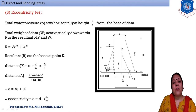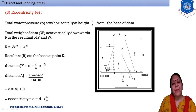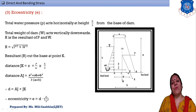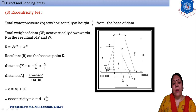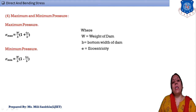The distance 'd' is the summation: d = aj + jk. The eccentricity 'e' is then calculated as e = d − (b/2), where b/2 is half the base width. If eccentricity is positive, sigma maximum occurs on one side; if eccentricity is negative, sigma maximum occurs on the opposite side.